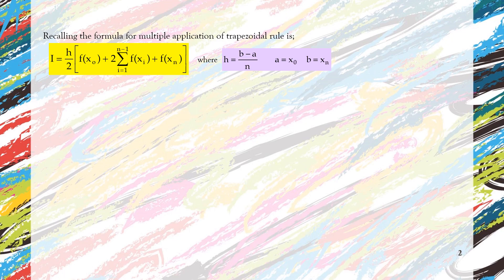So our a is x node, b is always x_n. Since the question gives us the number of segment n equal to 2, so the size of each segment is equal to h equal to 0.8 minus 0 divided by 2.